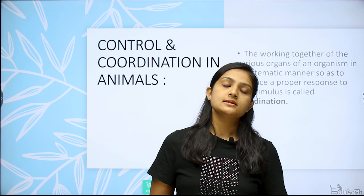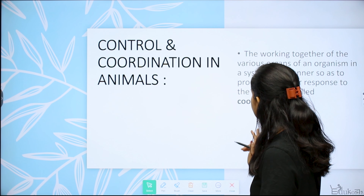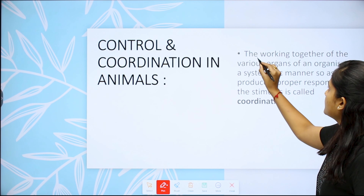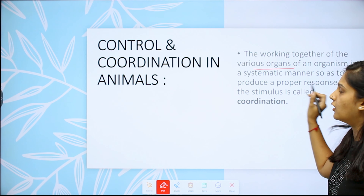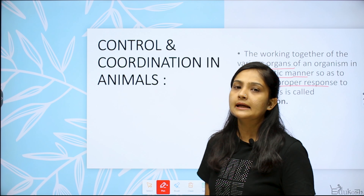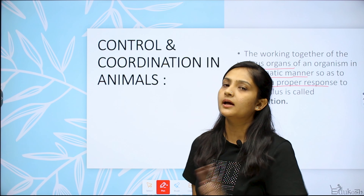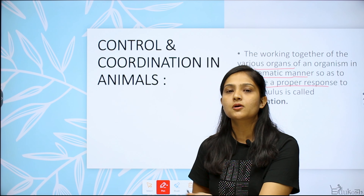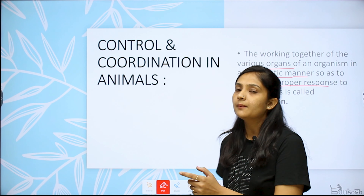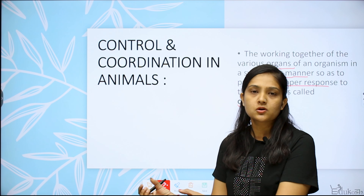In this video we will discuss the nervous system. The endocrine system will be covered in the next video. Control and coordination means the working together of the various organs of an organism in a systematic manner so as to produce a proper response. All body organs work together — this is called coordination.